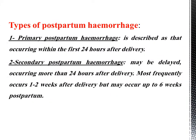Types of postpartum hemorrhage: Primary postpartum hemorrhage is described as that occurring within the first 24 hours after delivery. Secondary postpartum hemorrhage may be delayed, occurring more than 24 hours after delivery, most frequently occurring 1 or 2 weeks after delivery, but may occur up to 6 weeks postpartum.